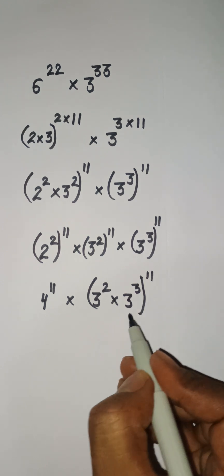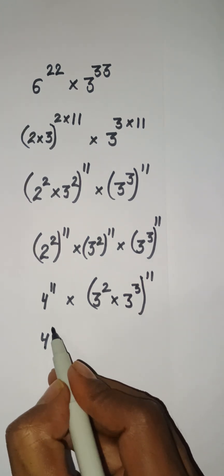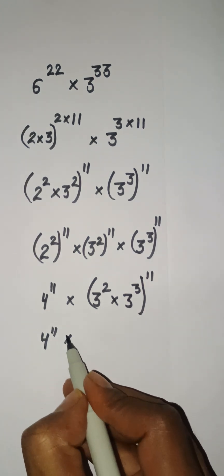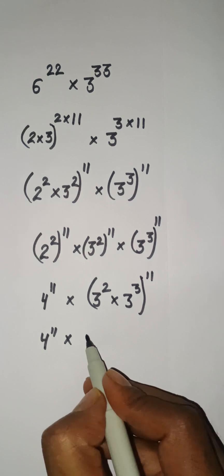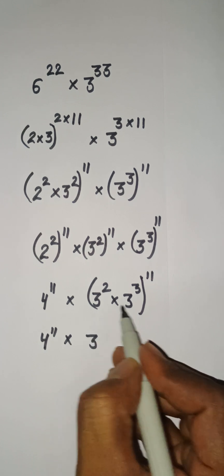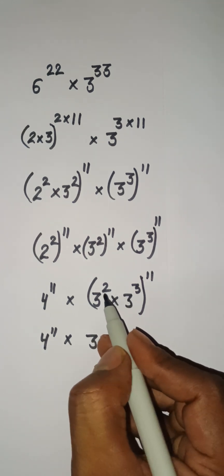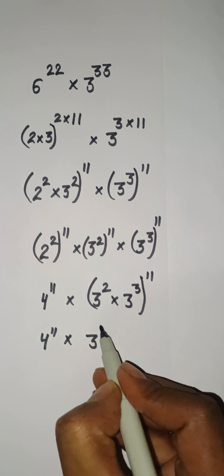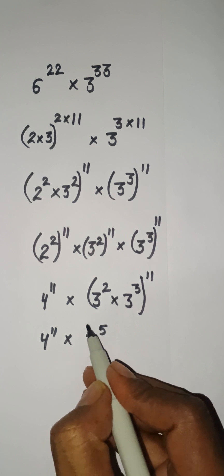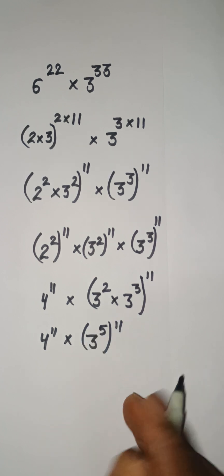So I am writing here power 11. Now, 4 to the power 11 — the bases are the same, so their exponents will be added together: 2 plus 3 gives 5, and here the power is 11.